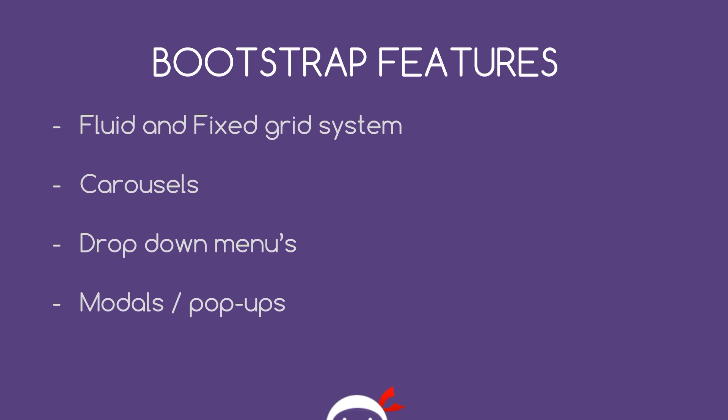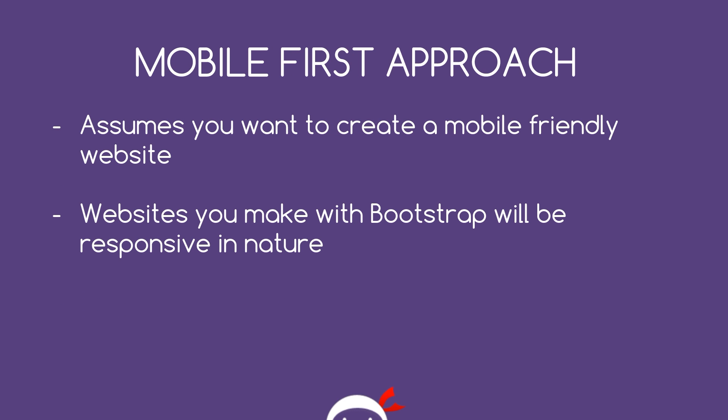Some of those features include the fluid and fixed grid system, which is going to make laying out content on your website a lot easier. There are also carousels, drop-down menus, modals or pop-ups, plus tons of other stuff too. Bootstrap also has a mobile-first approach, which basically means that any website you create in bootstrap is going to look great on a mobile — but only if you code it in the right way. It's going to assume we want a mobile-friendly website and take a lot of that responsive work out of our hands, doing all that dirty work behind the scenes.